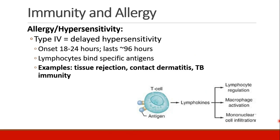A type 4 reaction is called delayed hypersensitivity. These have an onset of 18 to 24 hours before they begin and last for a few days. Here the lymphocytes are binding to specific antigens, and examples of these would be rejection of transplanted tissue, the contact dermatitis you might see from poison ivy or a metal allergy, and actually the tuberculosis test that we administer.